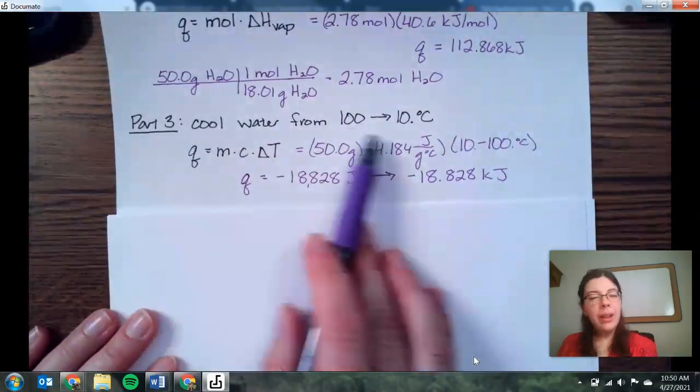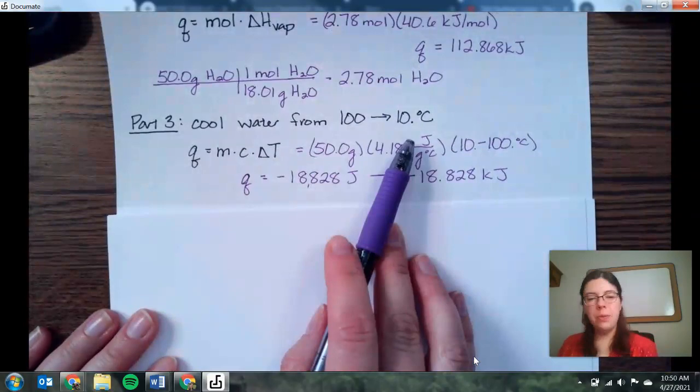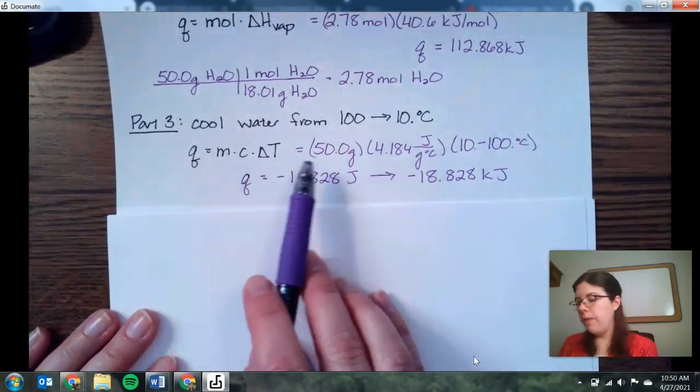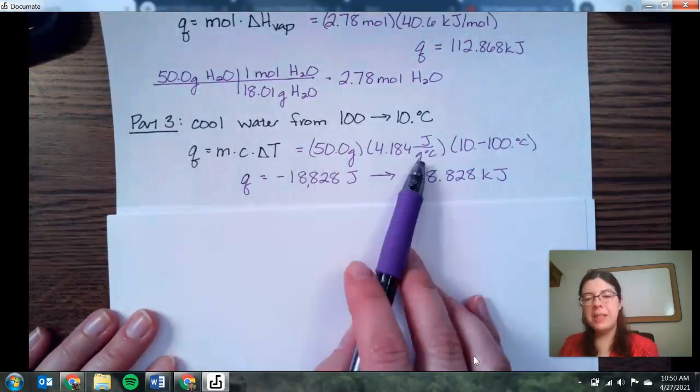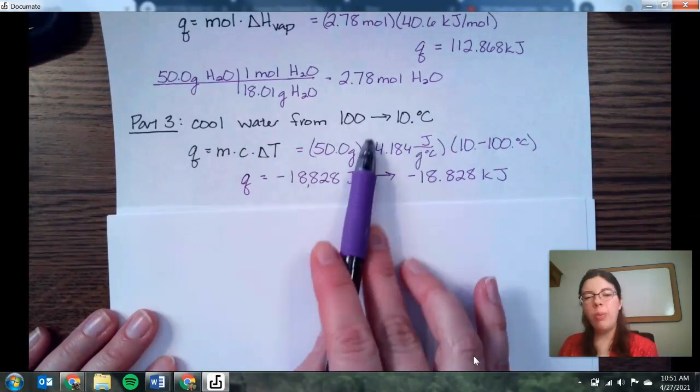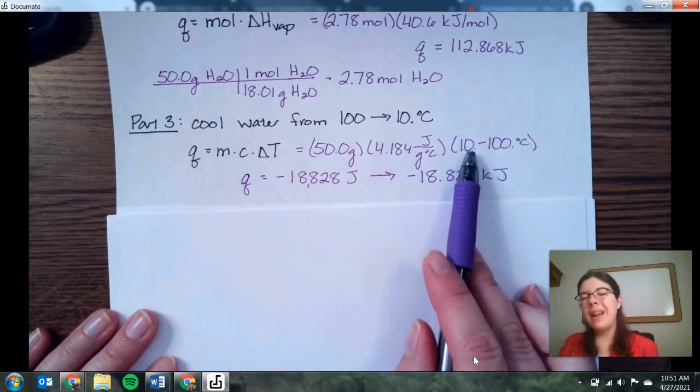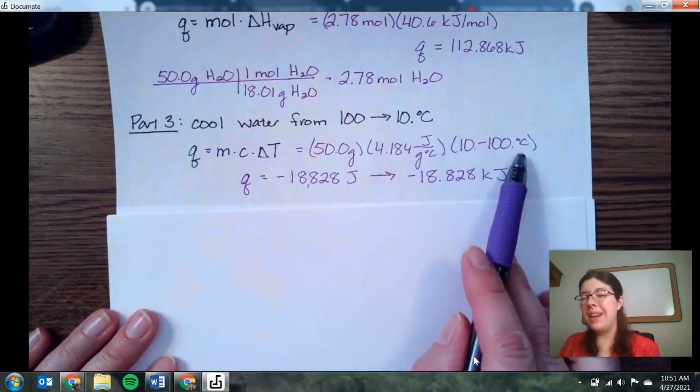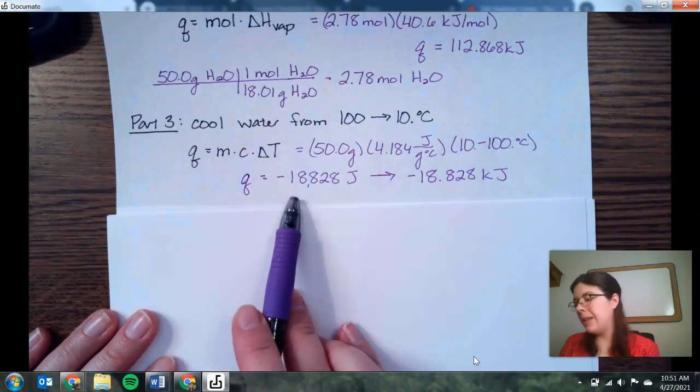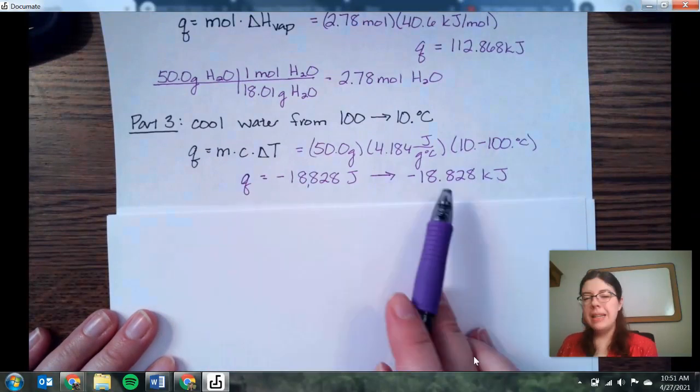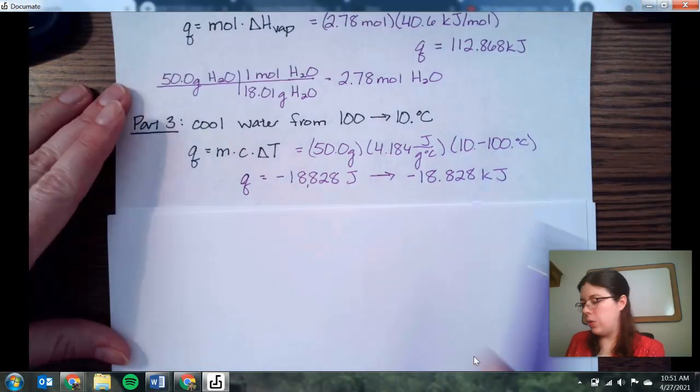Again, we're going to cool, so we're going to have a change in temperature, it's going to be delta T. So our mass doesn't change. Our specific heat does because now we have liquid water, so it's that 4.184 joules per gram degree Celsius. And then again, final minus initial, so that's going to be negative 90. When we multiply those all together, we get negative 18,828, or negative 18.828 kilojoules.